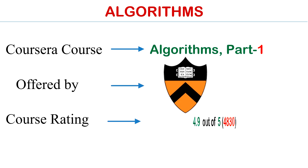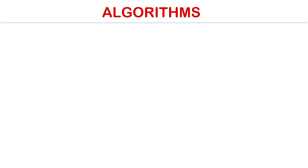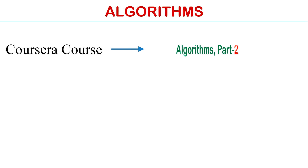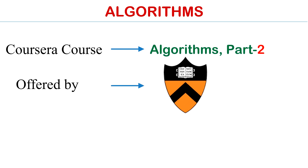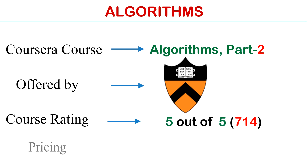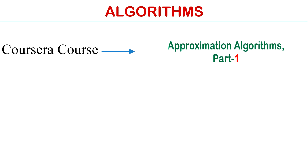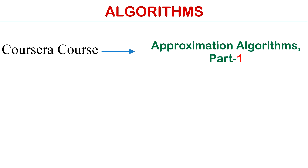Course number five is Algorithms Part One, offered by Princeton University, rated 4.9 out of 5 — also free. Course number six is Algorithms Part Two, also offered by Princeton University. The rating of this course is 5 out of 5 and the price is also free.